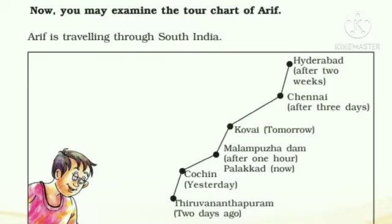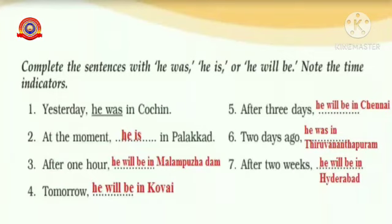Now you may examine the travel chart of Arif. Arif is traveling through South India. Complete the sentences with 'He was', 'He is', or 'He will be'. Note the time indicators.